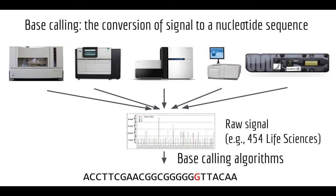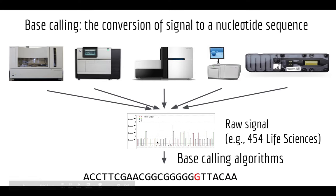The raw signal from a sequencer — like 454 traces — isn't read by humans one by one when there are millions of them. We need algorithms that convert this raw signal into a called sequence. Most of the time this conversion reflects the true sequence, but every once in a while it makes a mistake. The frequency with which errors arise governs how useful the technology is for different biological questions.